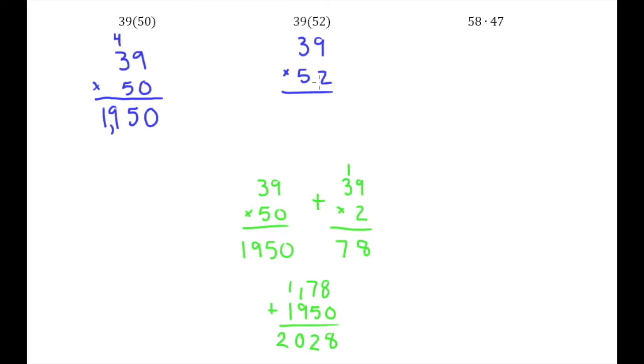So all I've done is I've basically split this into 50 and 2 and then added them together. Now the shorthand way of doing this problem is using the exact same principle but just without writing quite as much down. So what we're going to do is start by multiplying the ones place of the bottom number by all the digits in the top number. So 2 times 9 is 18. 2 times 3 is 6 plus 1 is 7. So there's my 78 that I also had down here.